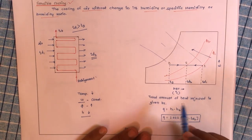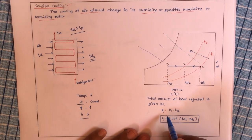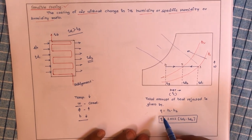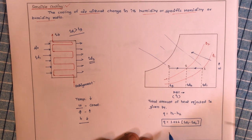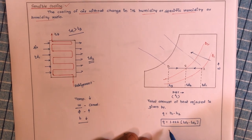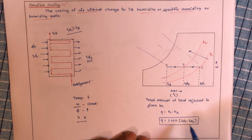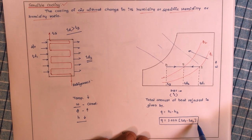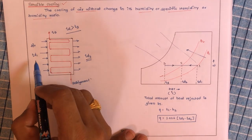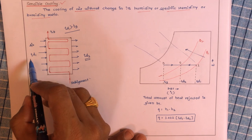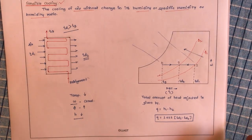Now, how can we calculate the amount of heat rejected? Similar to the sensible heating process, we can write: Q = h1 − h2, or equivalently Q = 1.022 × (Td1 − Td2), where Td1 and Td2 are the air inlet temperature and air outlet temperature respectively.